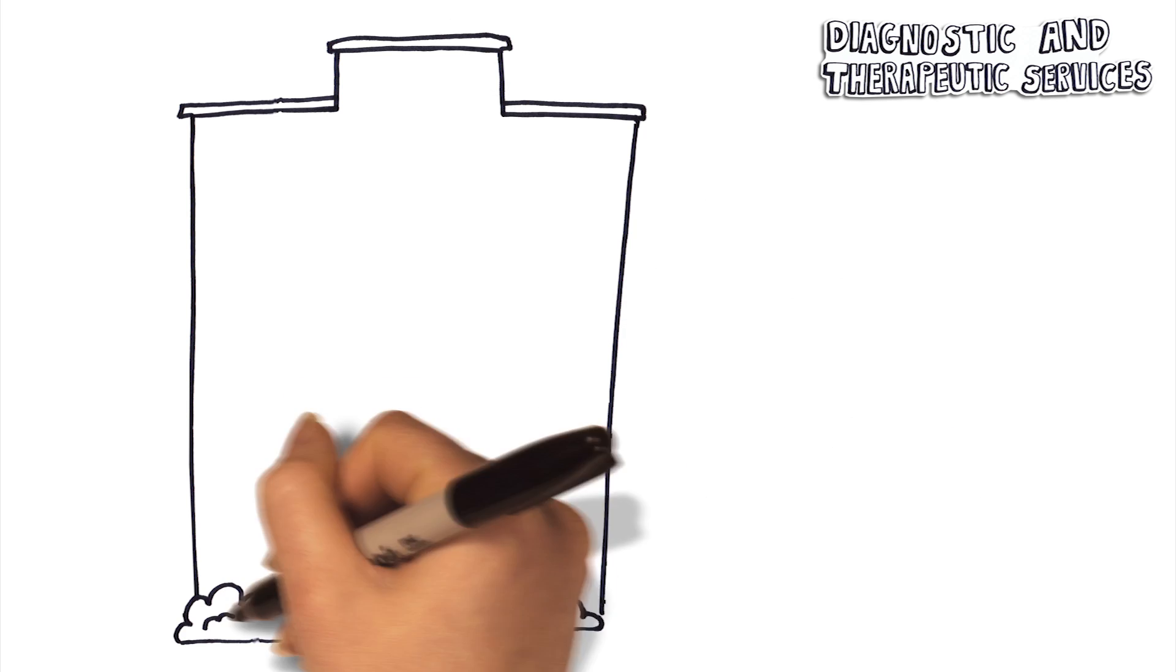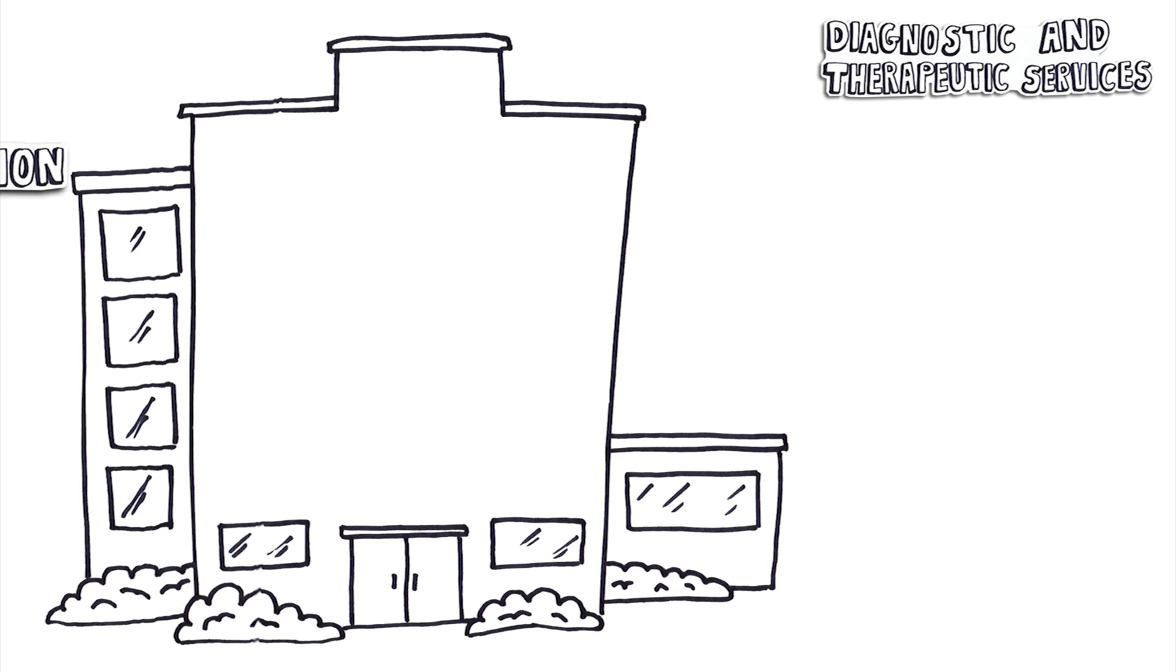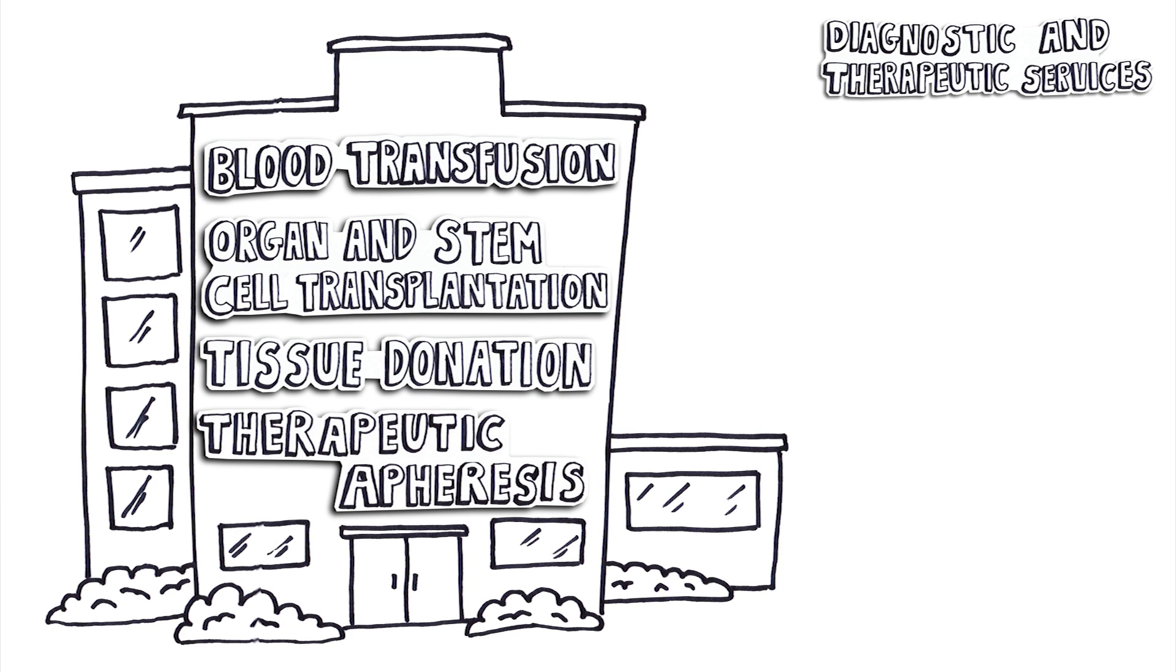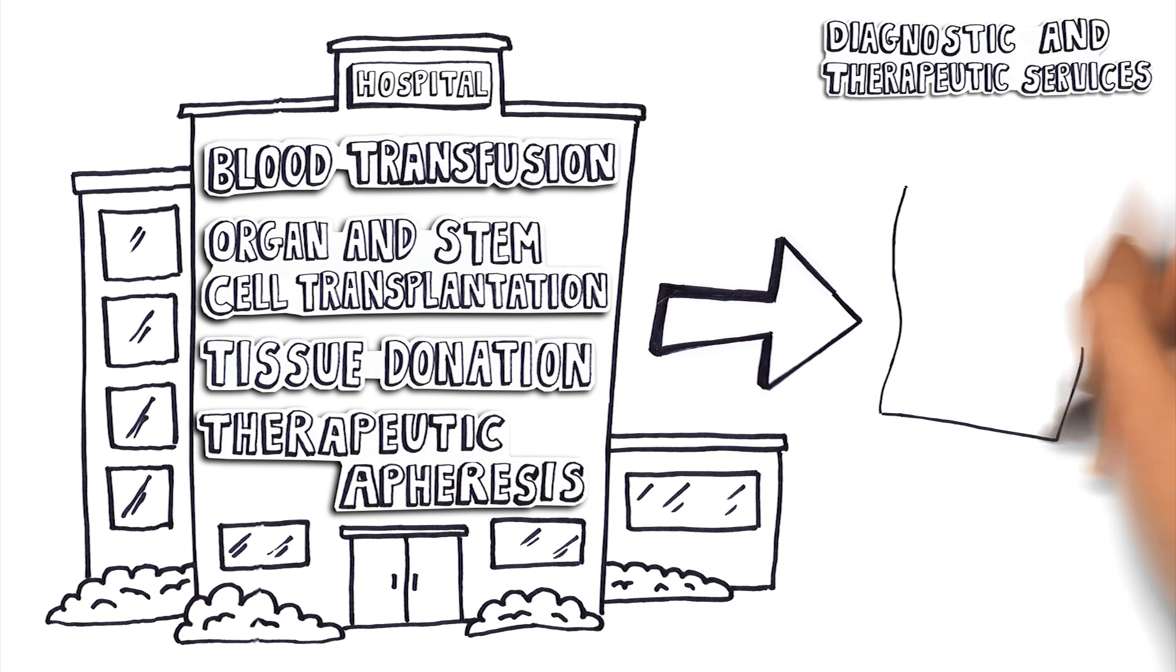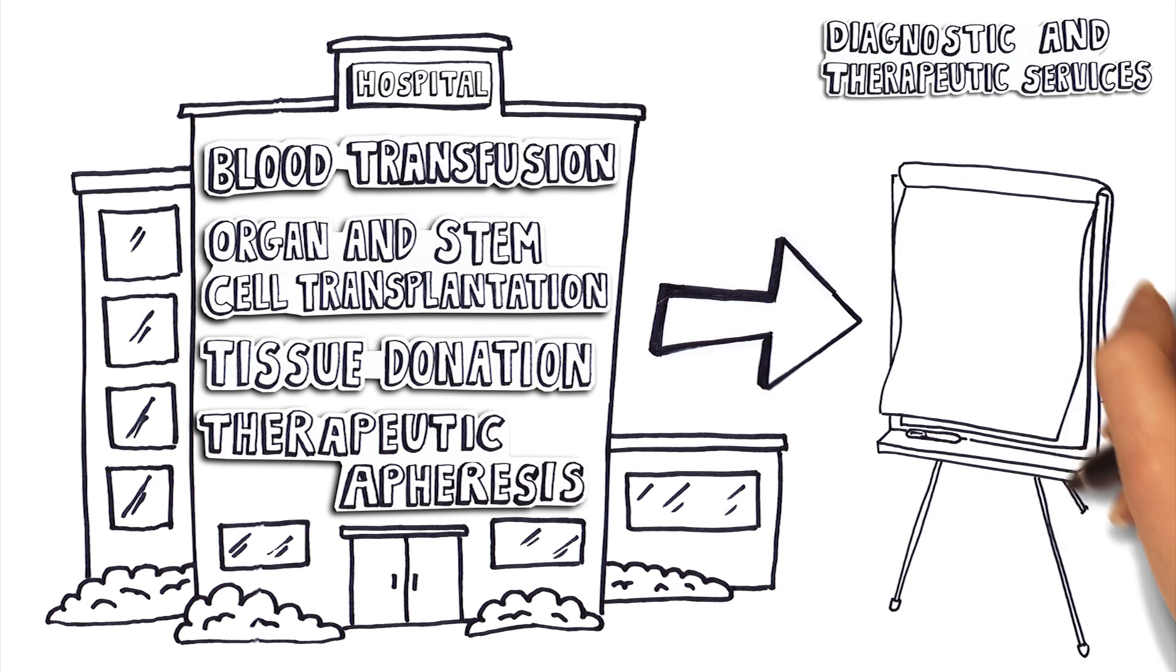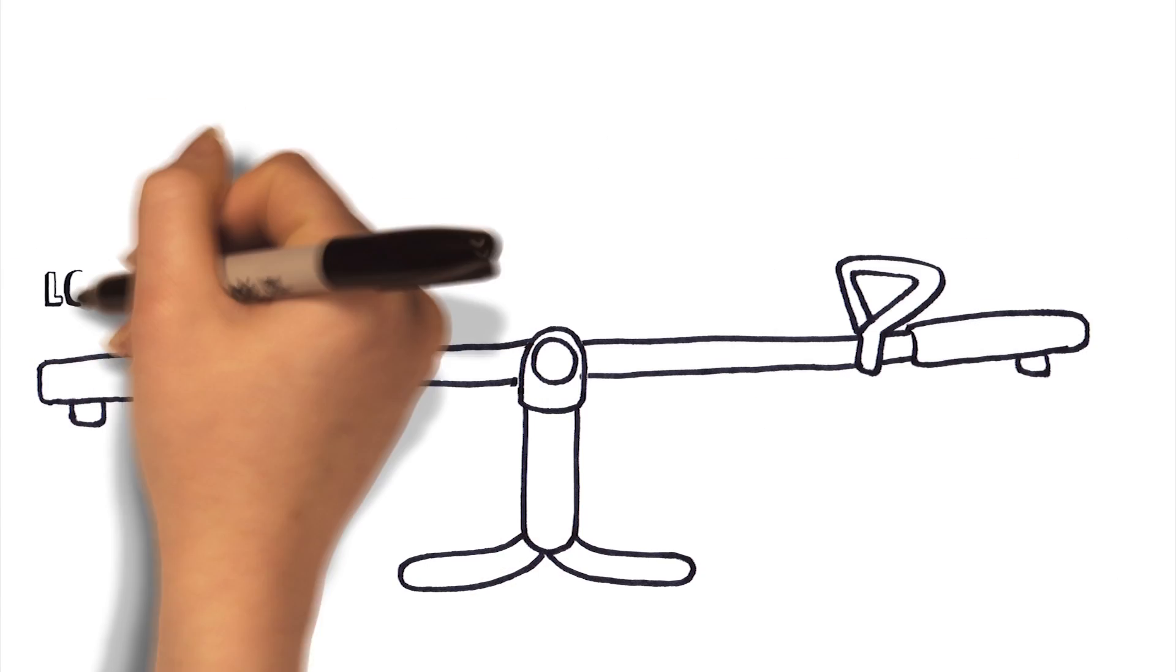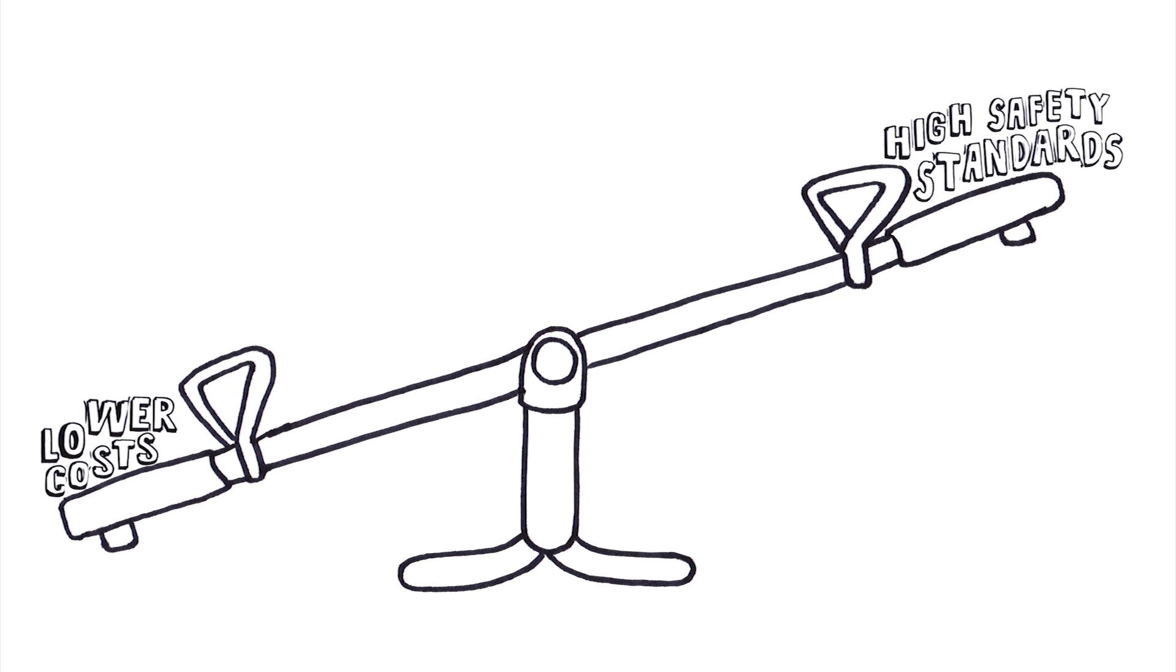We provide a range of products and services to meet critical patient needs, supporting blood transfusion, organ and stem cell transplantation as well as tissue donation and therapeutic apheresis treatment for patients in NHS hospitals. Each of the five operating units has a clearly defined strategy. The common objective is to deliver a range of specialist products and services to more NHS patients to high safety standards but at a lower cost to the NHS.